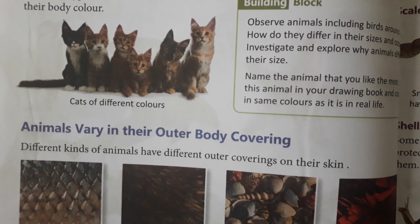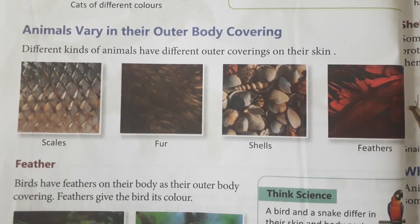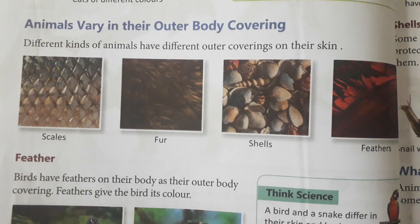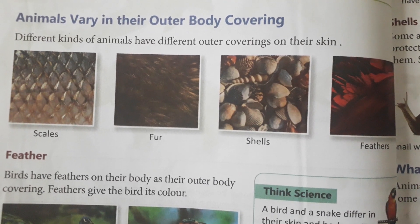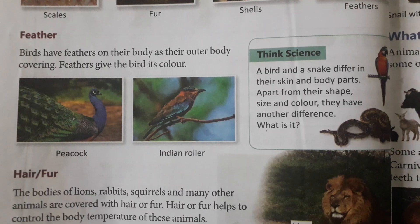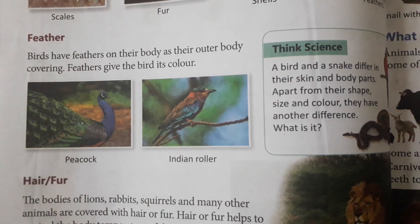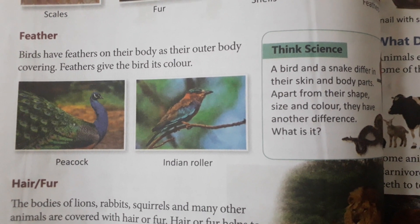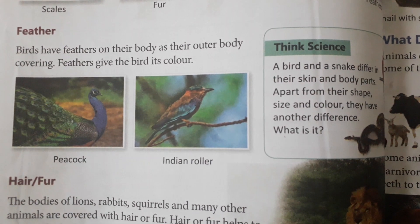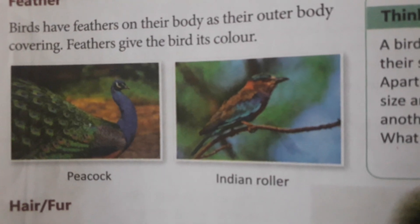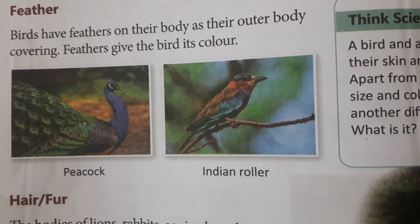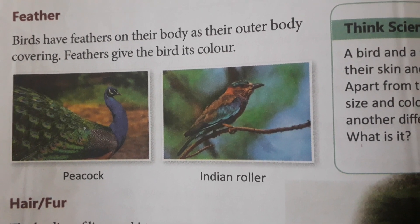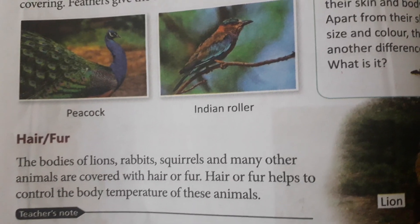We will study different kinds of outer coverings on animal skin. Aap dekh sakte hain - kisi ki body par scales hoti hain, kisi par fur hoti hai, kisi par shells hoti hain, kisi par feathers hoti hain. First, feathers - birds have feathers on their body as their outer body covering. Feathers give the bird its color. You can see the peacock and the Indian roller - both birds have different feathers, so their color is also different.